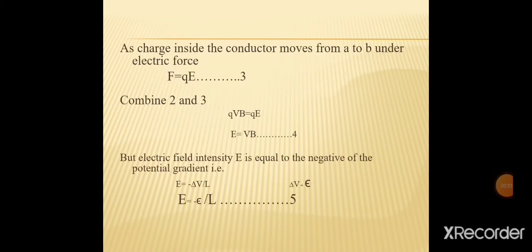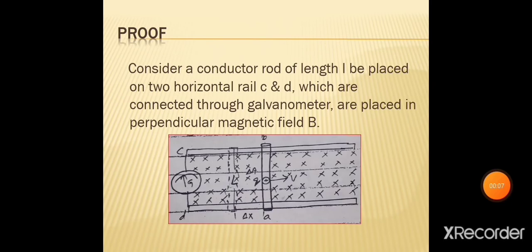Charge inside the conductor moves from a to b under electric force: F = qE (equation 3)۔ جب rod کو rails پر move کروایا گیا تو flux change ہوا، EMF induced ہوئی، اور اس EMF کی وجہ سے electric current بھی flow کرے گا۔